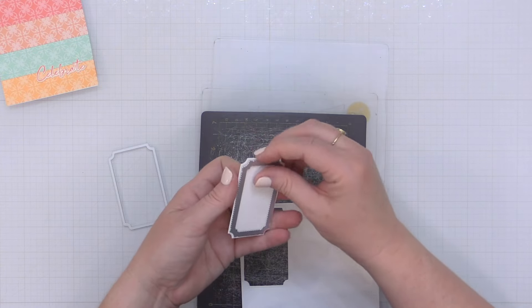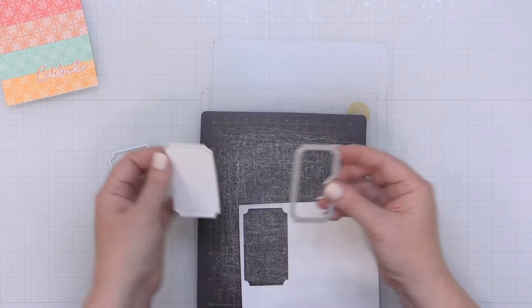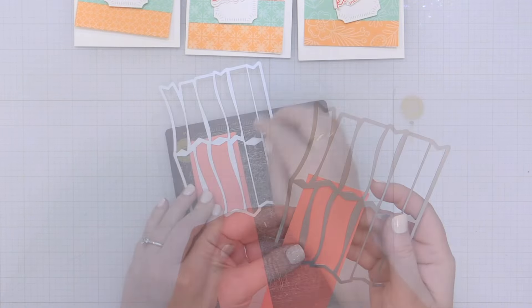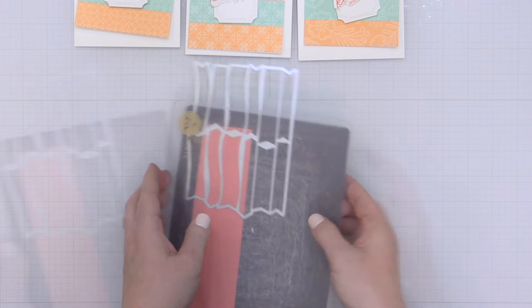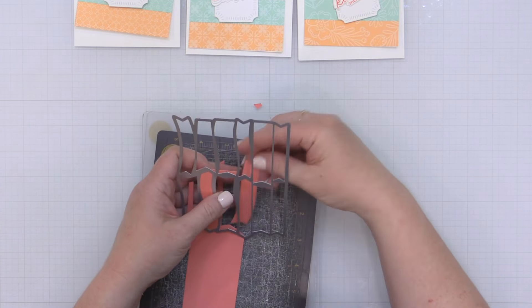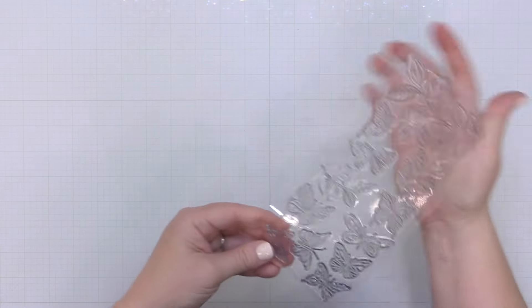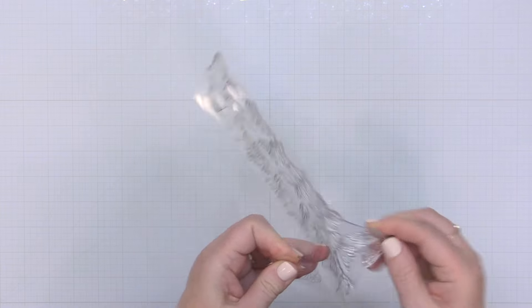Now I'm taking the Notched Rectangle Frames and I'm running this through my die cut machine using some white cardstock. I've die cut three of those because I'm making three cards. I'm also going to die cut three of these banners using the Basic Banners die set. This has a stamp that coordinates with it as well and I'm going to set those aside. I've die cut those from some pink and some gold cardstock.